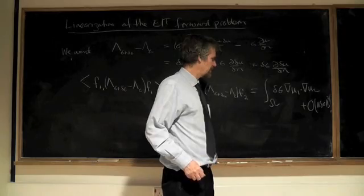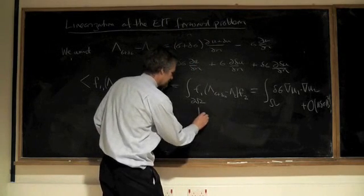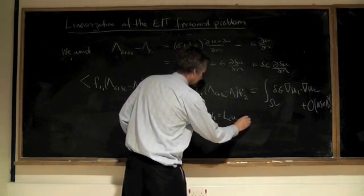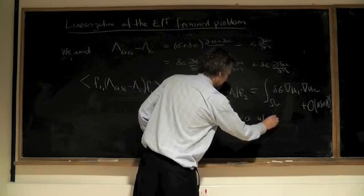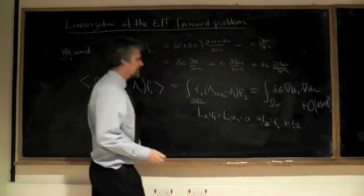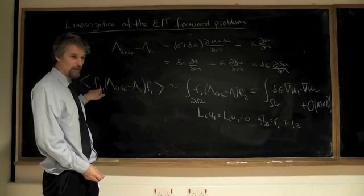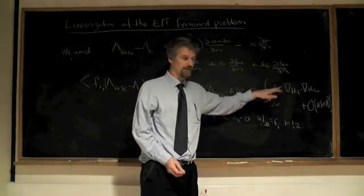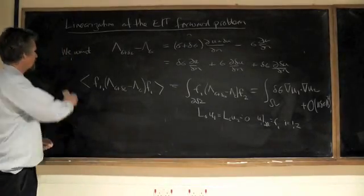Because the idea is ui restricted to the boundary gives the fi, i equals one two so we actually solve two boundary value problems with these two voltages as the data and then this gives us a convenient way of getting the perturbation of delta delta sigma.